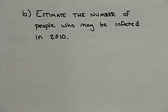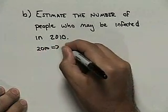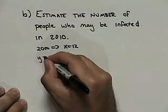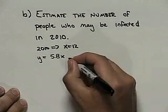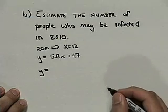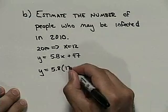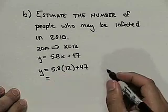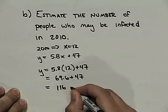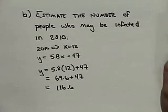The second question asks us to estimate the number of people infected in 2010. The year 2010 corresponds to x equals 12. Using our equation y equals 5.8x plus 47, we substitute x equals 12: y equals 5.8 times 12 plus 47, which gives 69.6 plus 47, equaling 116.6. So according to our model, 116.6 million people will be infected with HIV in the year 2010.